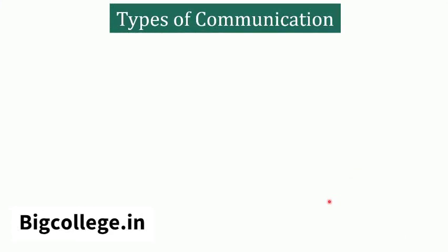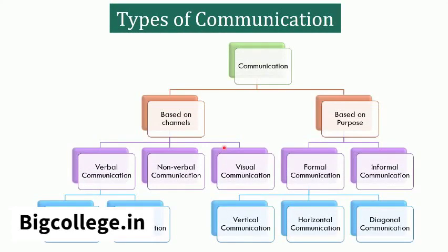Types of communication: Communication can be classified on the basis of channels and on the basis of purpose. Based on channels, there are three types of communication: verbal communication, non-verbal communication, and visual communication. Verbal communication involves the use of words and language in conveying the information. It can be oral communication and written communication.